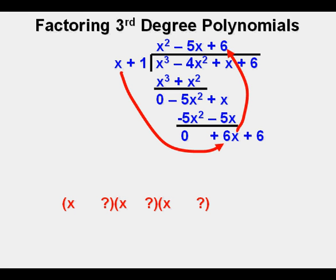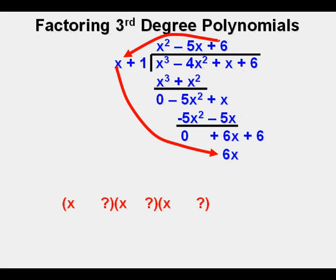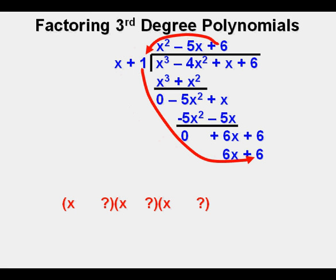Next we bring down the 6. We then divide 6x by x and get 6. Now we multiply the 6 by x, which is 6x, and place it under the 6x. Then we take the 6 and multiply it by 1, which is 6, and place it here under the 6. Finally we subtract 6x from 6x and 6 from 6 and have nothing left.